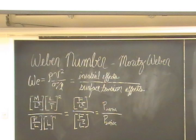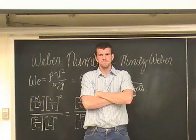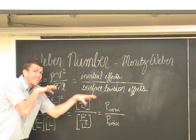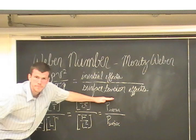Hello. Today we will be talking about the Weber number. First postulated by Moritz Weber in 1931, the Weber number is a dimensionless quantity used when analyzing the interface between two fluids. It compares the inertial effects of a flow to its surface tension effects.